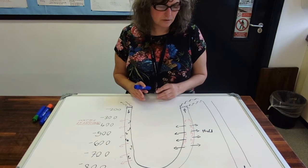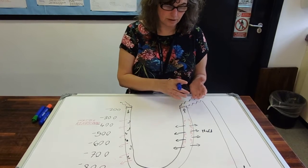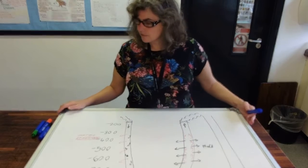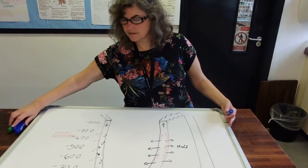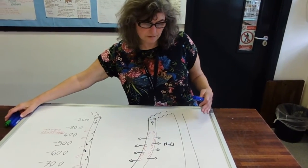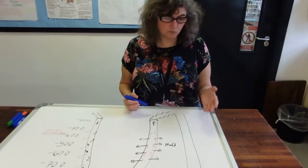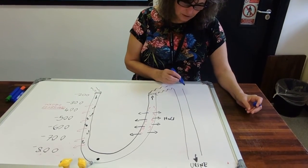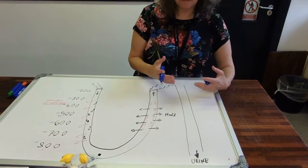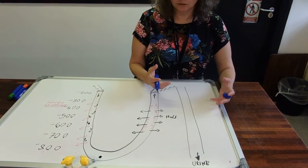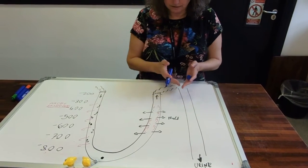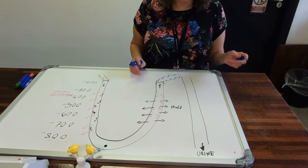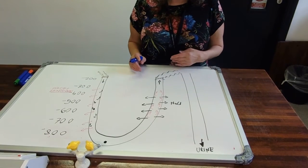We're going to look at two scenarios: what happens if you get dehydrated, and what happens if you're overly hydrated. If you're dehydrated, your water balance is out of whack — you haven't taken enough water in to cope with your water loss. What that means for the body is that you want to absorb more water out of the filtrate and put it back into the bloodstream.